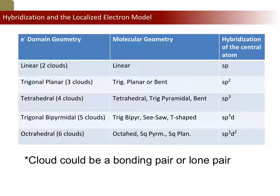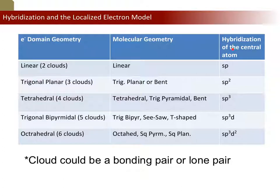If you have a domain geometry with two electron clouds, it is sp hybridization. Trigonal planar domain geometry is sp2 — three clouds hybridize three orbitals. Four clouds in tetrahedral domain geometry hybridize four orbitals — sp3. Five clouds hybridize five orbitals — sp3d. Six clouds hybridize six orbitals — sp3d2. The middle column tells you what molecular geometry shapes are possible with three or four clouds, but as soon as you know the domain geometry, you can automatically predict the hybridization. That's the extent of what you'll be asked on my test and the AP test.